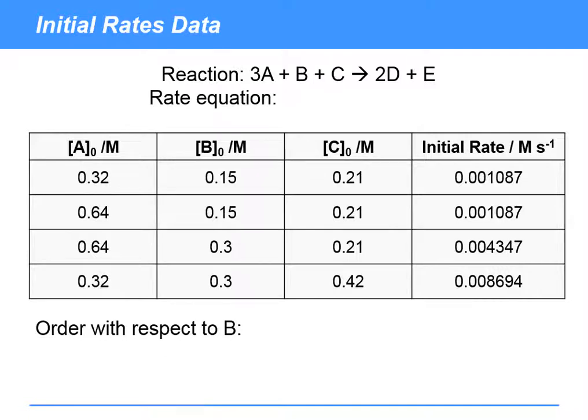So order with respect to B. Again, treat everything in this first row as if it's 1 and do the other rows relative to it. So let's look at this second row here. Well, we've got a doubling there. We've got a doubling of B, we've got a doubling of C, and the rate, let's see how much it's changed by. We can do 0.004347 divided by 0.001087, and we find that's around about 4.